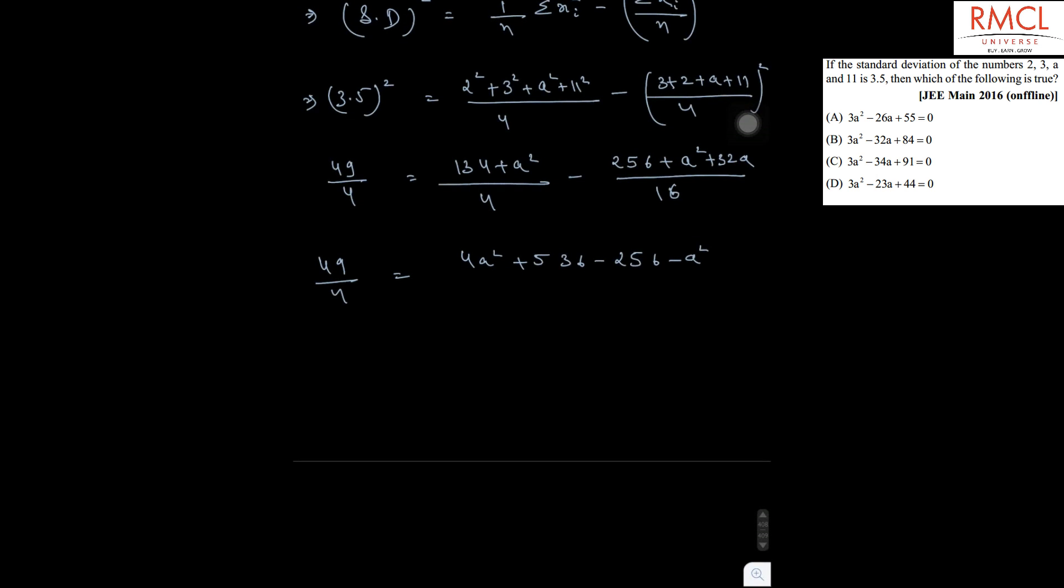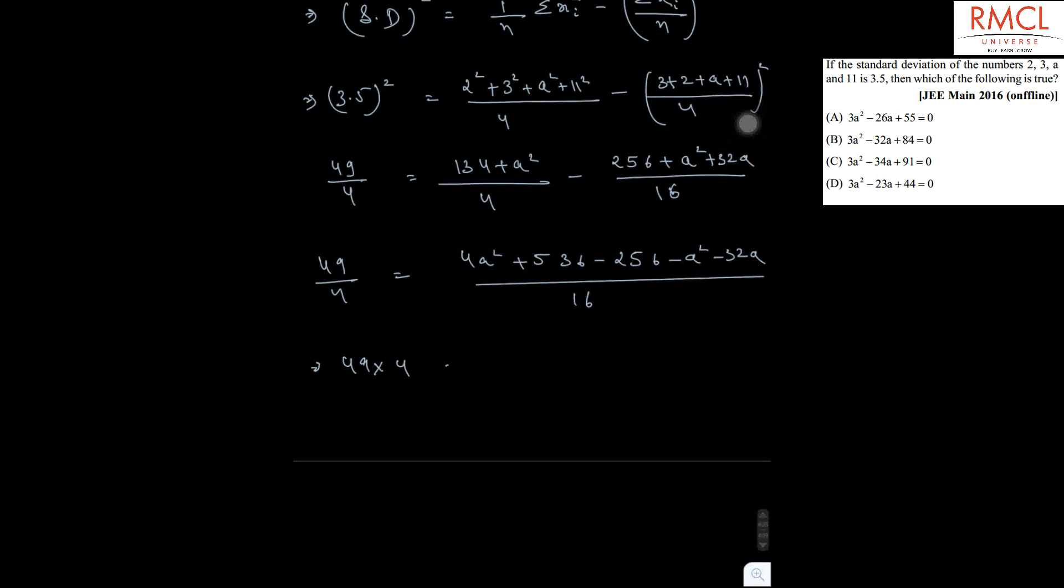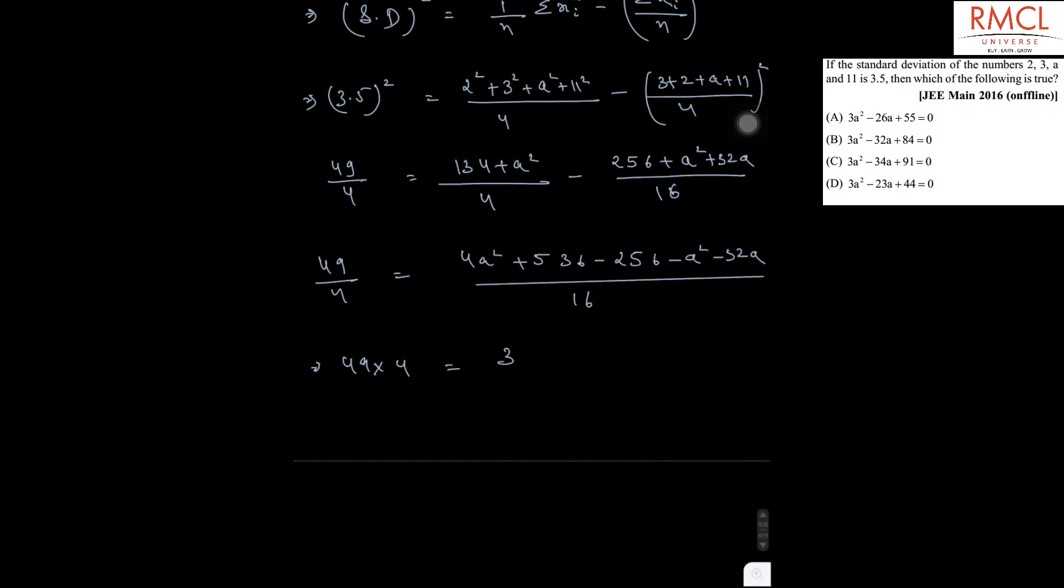4a square minus 32a divided by 16. So from this, 49 multiplied by 4 is equal to 3a square minus 32a plus 280.